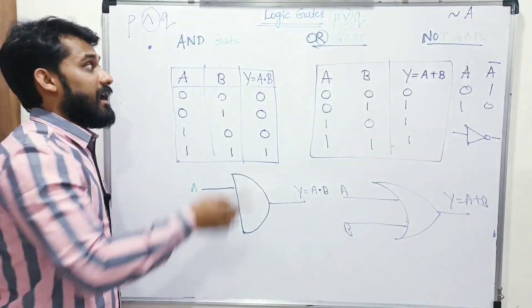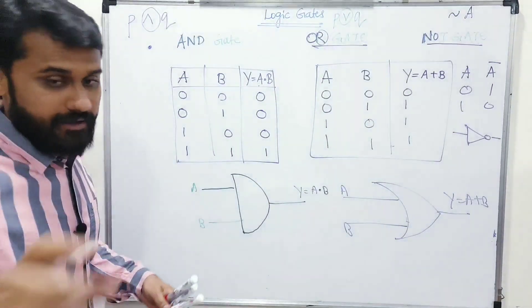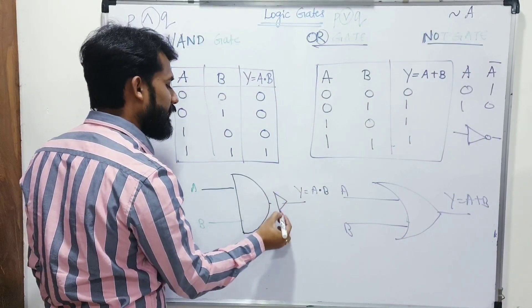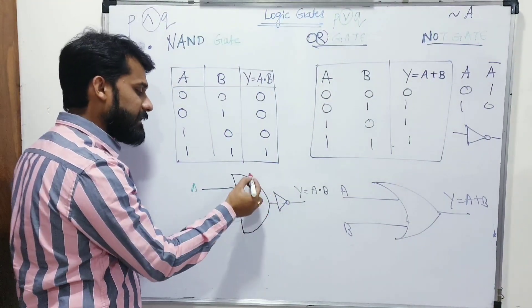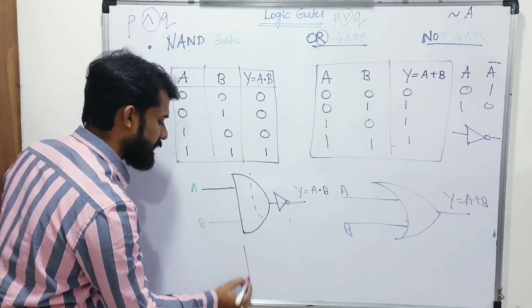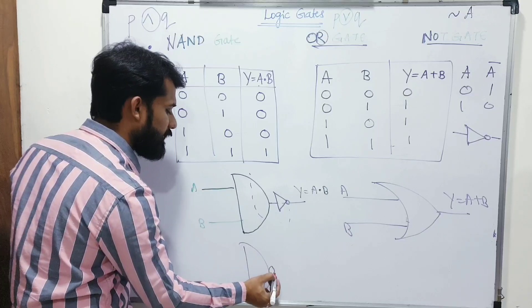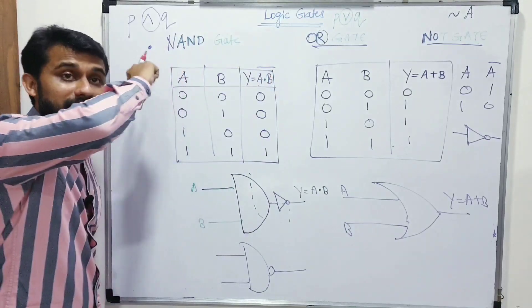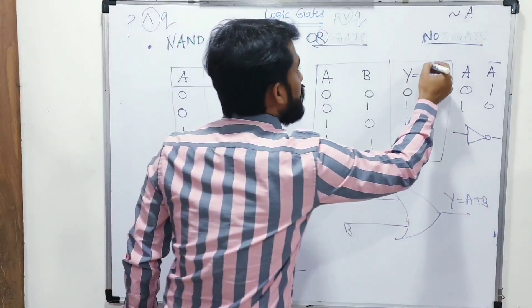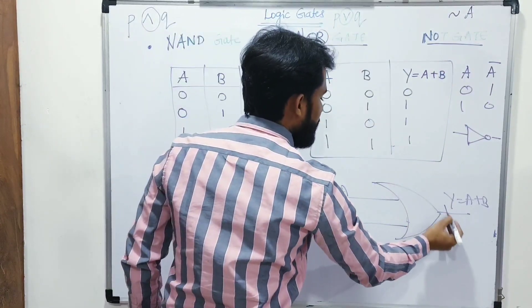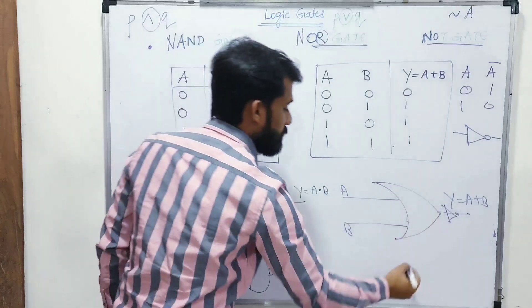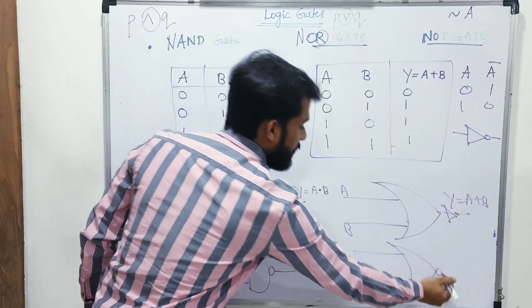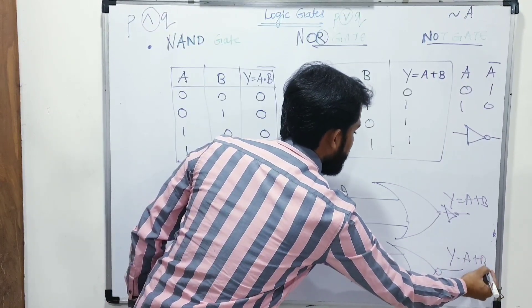If we negate the AND gate, we get a NAND gate — it is an AND gate followed by a NOT gate. Its symbol is the D shape with a small circle at the output: Y = (A · B)̄. Similarly, negating OR gives NOR gate — OR gate followed by NOT gate. Its symbol is the curved R shape with a small circle: Y = (A + B)̄.